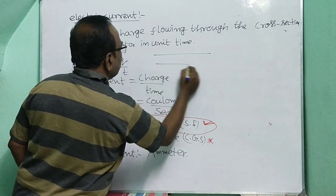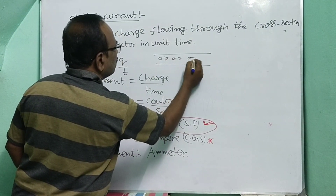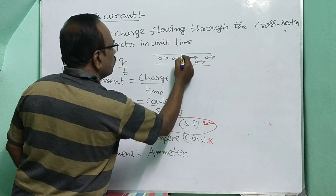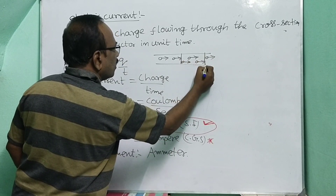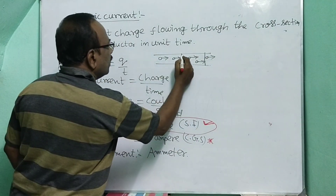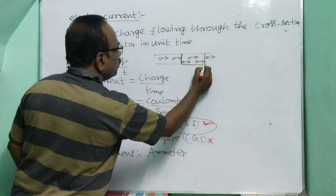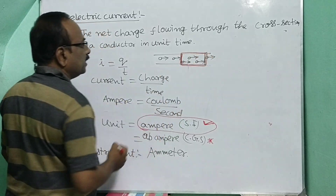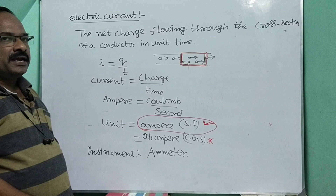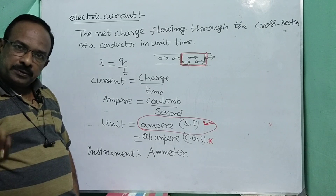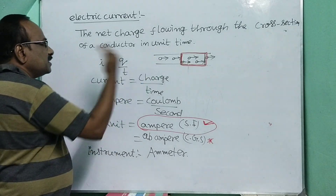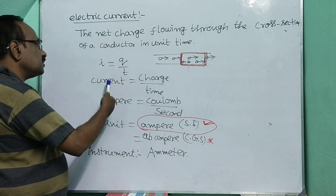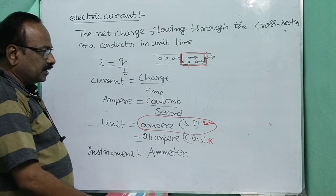This is the current-carrying wire where lots of electrons are flowing. Suppose this is the cross-section — a unit normal area. In this unit normal area, how many electrons are flowing per unit time? That is called electric current. The net charge flowing through the cross-section of a conductor in unit time is called electric current.